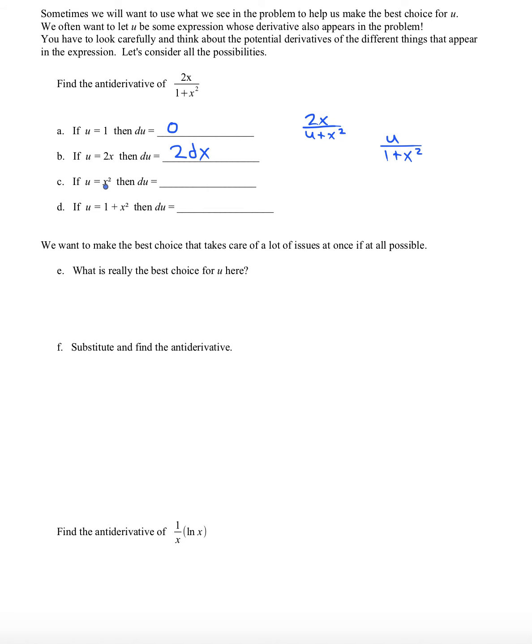Now what if we let u be x squared? Then we would have 2x over 1 plus u. Du would become 2x dx.